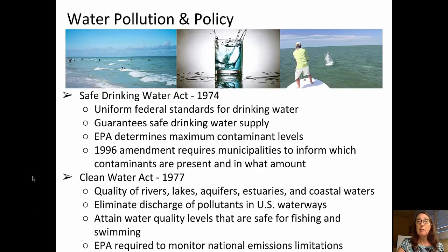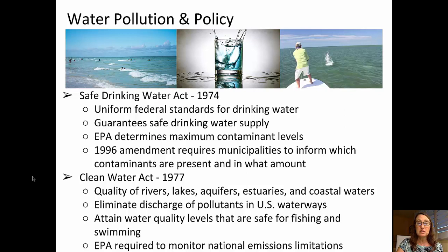Now we'll talk about two policies that impact water pollution. In 1974, the Safe Drinking Water Act was passed. It establishes uniform federal standards for drinking water and guarantees safe drinking water. The Environmental Protection Agency determines the maximum contaminant levels. In 1996, an amendment required municipalities to inform the public of contaminants present in their drinking water and in what amounts.